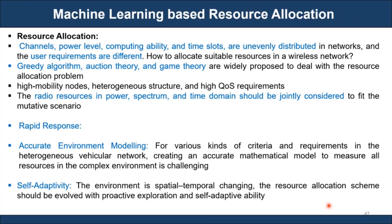In recent papers, people are exploring game theory-based or auction theory-based approaches to predict resource allocation in fifth and sixth generation networks. Next year we may see many similar approaches for sixth generation. Greedy algorithms are also being considered. One can hybridize any of these or find modifications in existing algorithms and observe the performance.